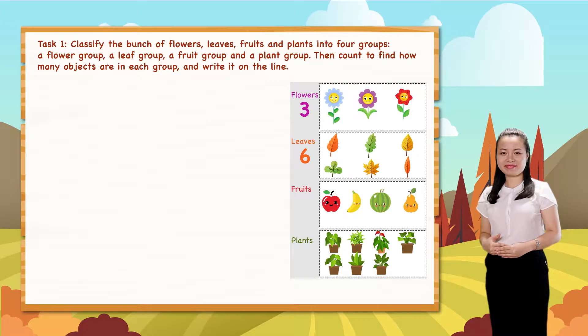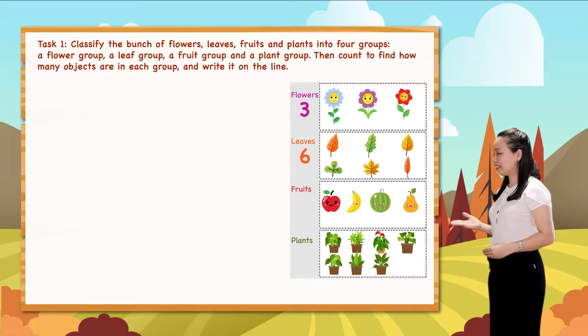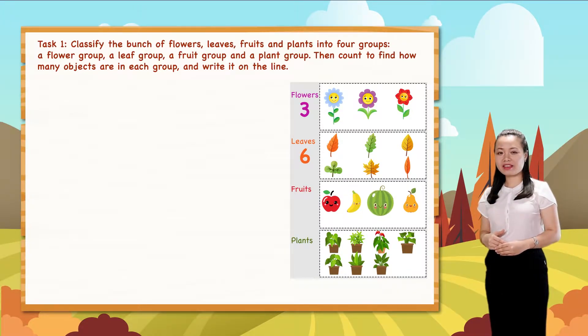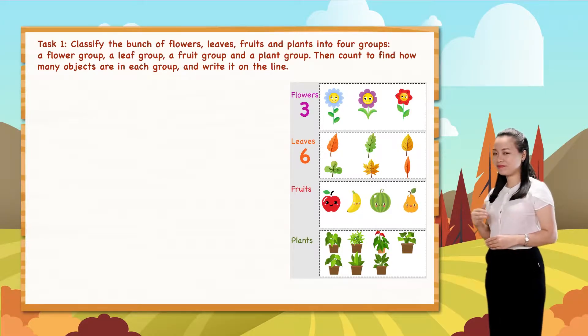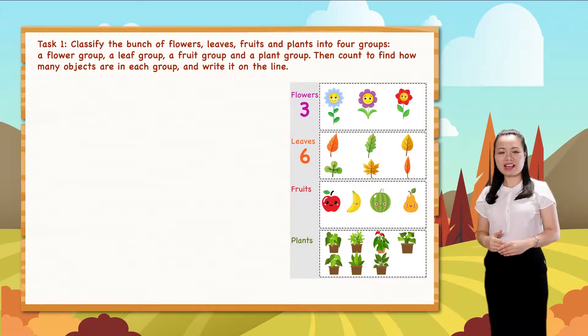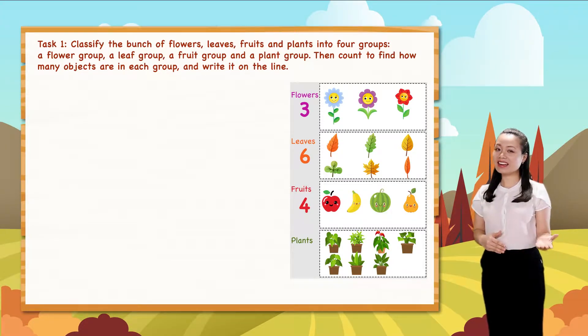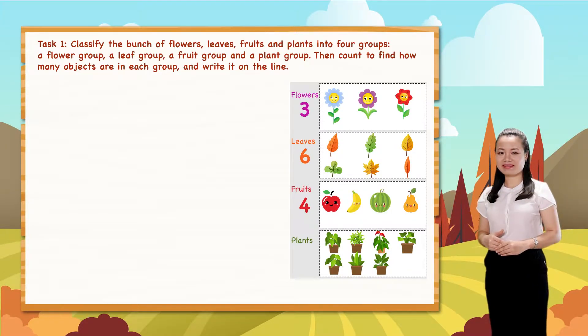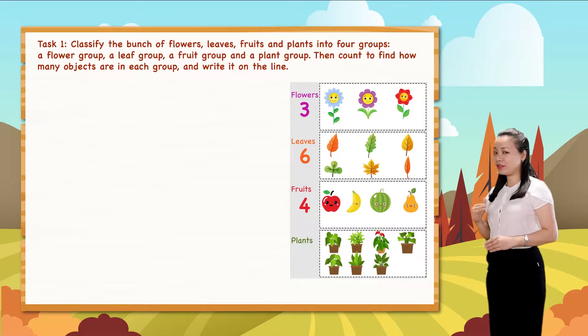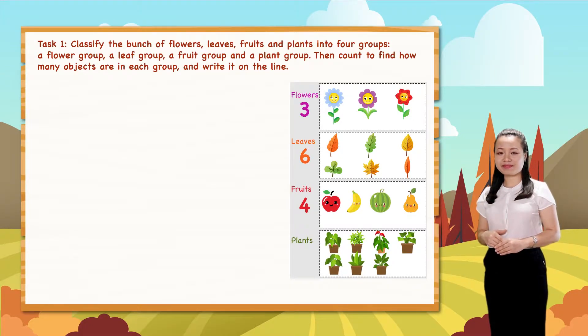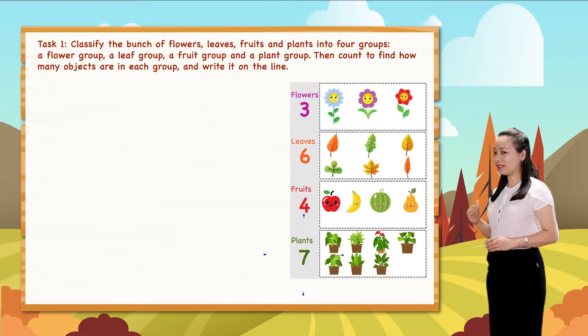Next, one, two, three, four. So, there are four fruits. The last one. One, two, three, four, five, six, seven. So, there are seven plants.